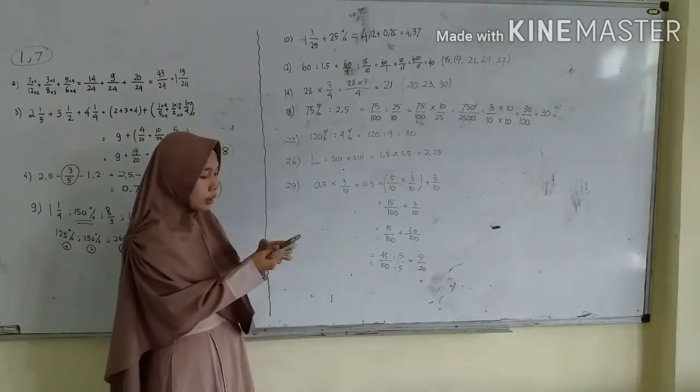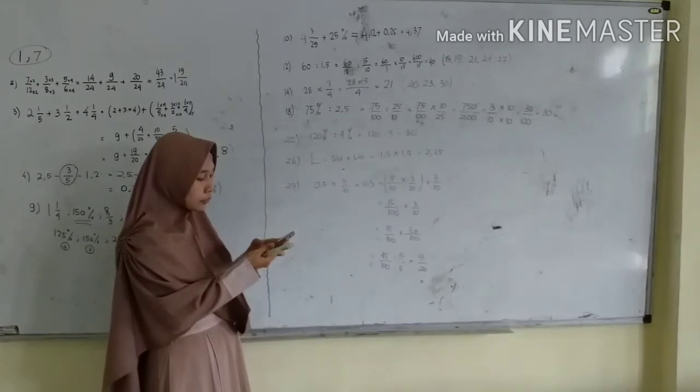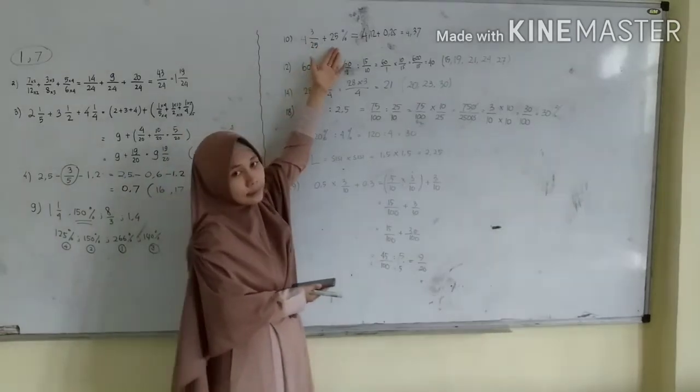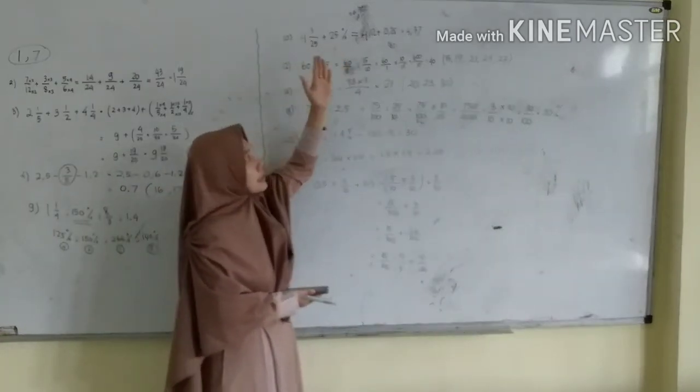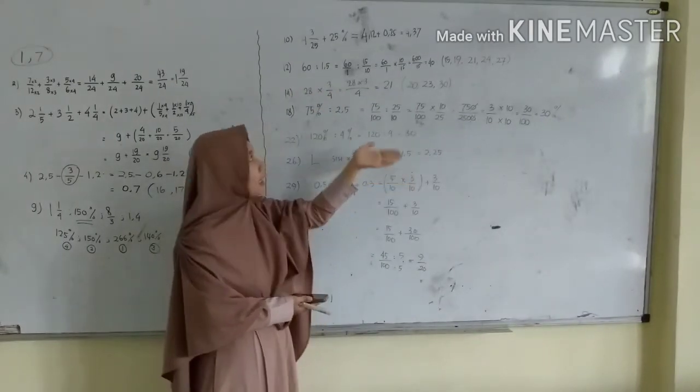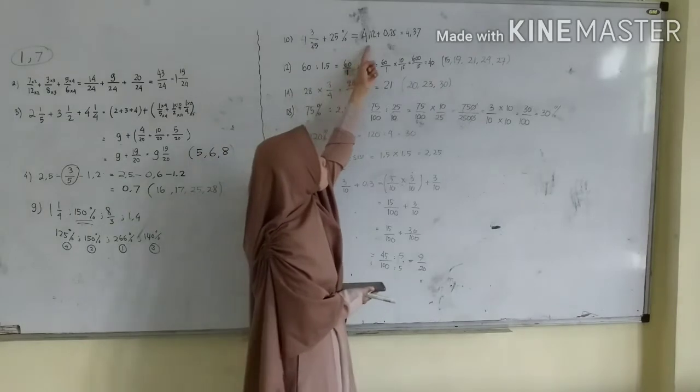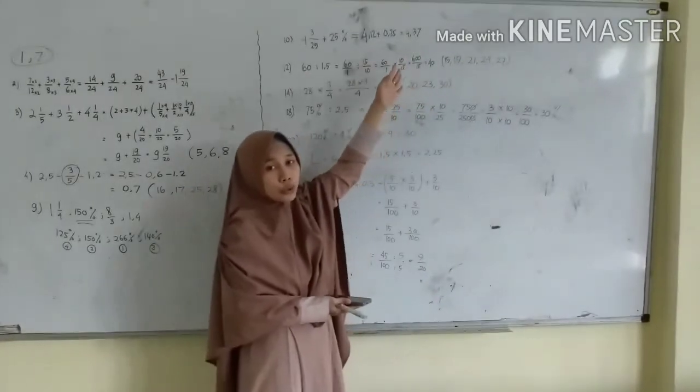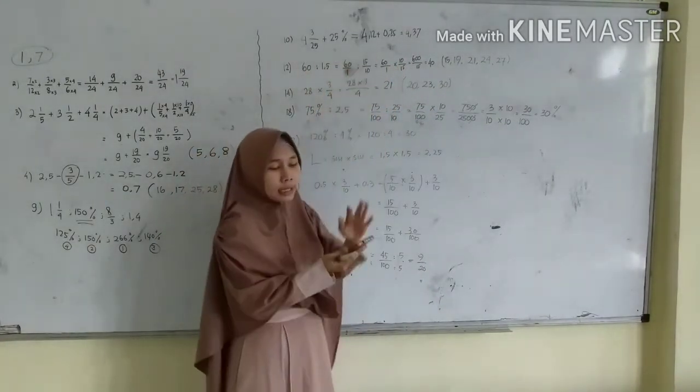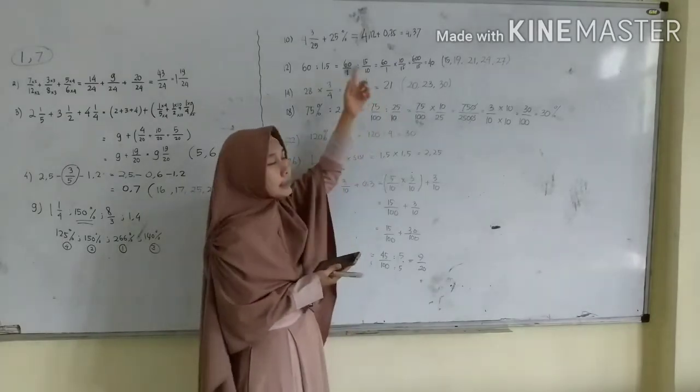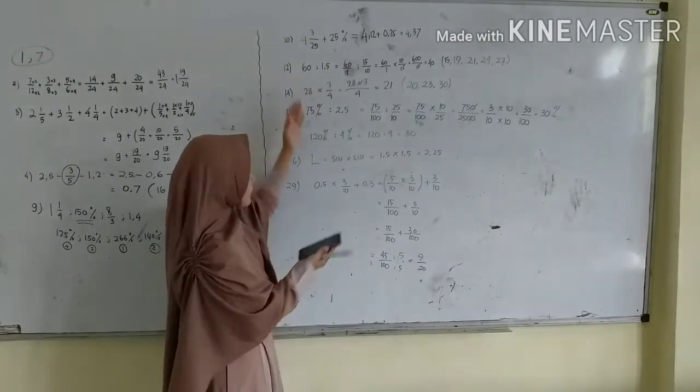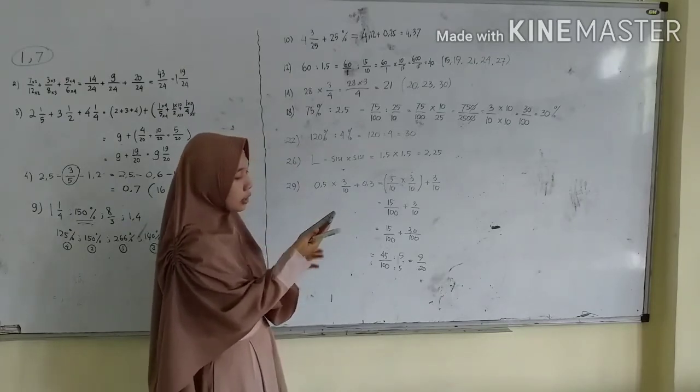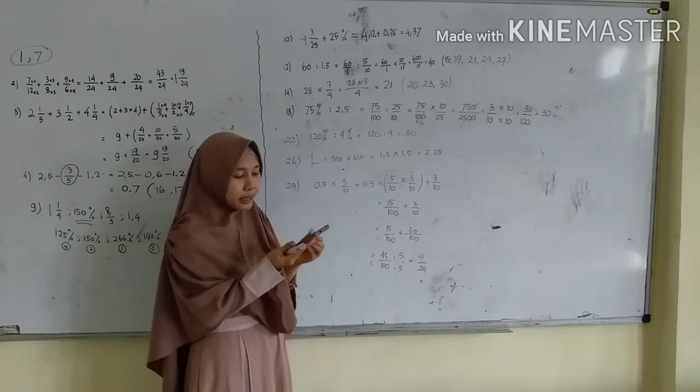Lanjut ke nomor 10. Nomor 10 itu adalah ditanyakan hasil dari 4 1/8 ditambah persen ya. Karena tidak sama maka samakan dulu bentuknya ya, menjadi desimal 4,12 ditambah 0,25 hasilnya adalah 4,37 ya. Kenapa menjadikan desimal? Karena disini pilihan jawaban, pilihan jawabannya adalah desimal.